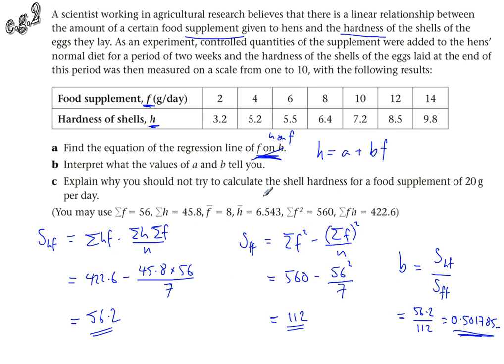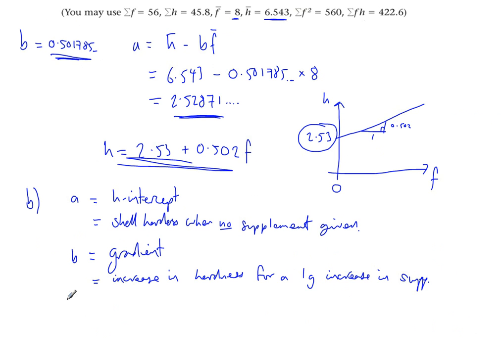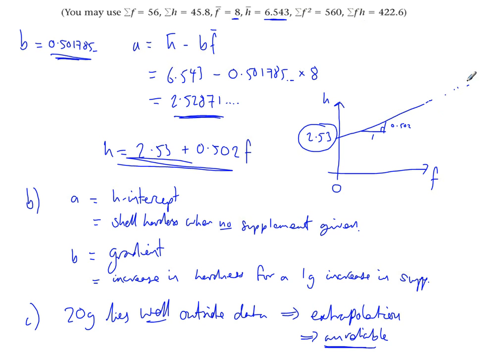Finally we're asked to explain why we shouldn't try to calculate the shell hardness for a food supplement of 20 grams. Well that would be extrapolation. 20 grams is somewhere up here, well outside of the data. We've tested food supplements from 2 grams a day up to 14 grams a day, nowhere near 20. So it would be rather foolish to expect that to be a good prediction. We can say 20 grams lies well outside the range of data, and so it would be extrapolation, so it would be unreliable. We just don't know whether this linear relationship carries on up here or not.